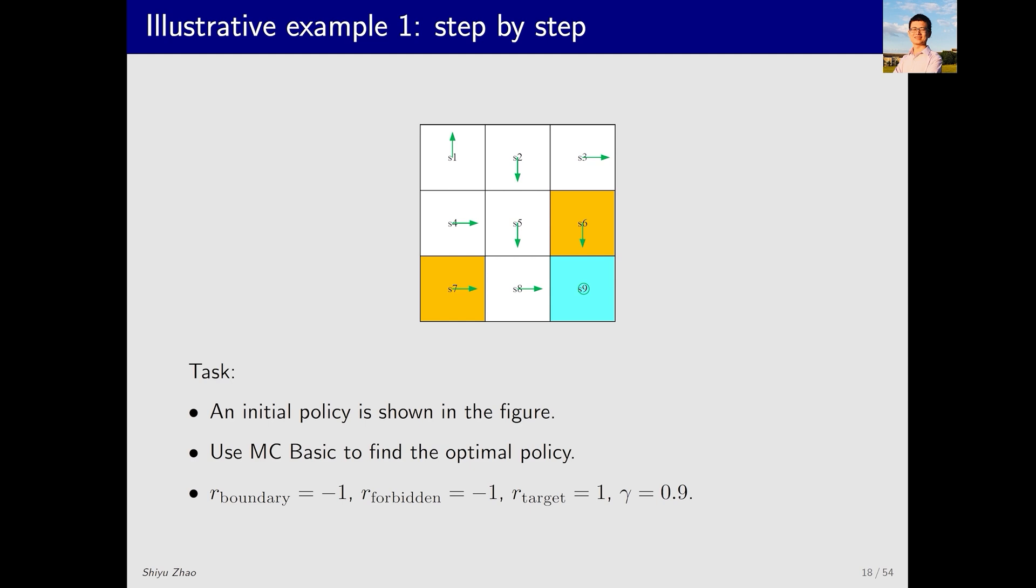Let's look at this example. Consider an initial policy denoted as π0. In most states, this policy is good except for states S1 and S3, where it is not good. We will apply the MC Basic algorithm to find an optimal policy.